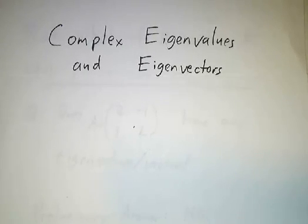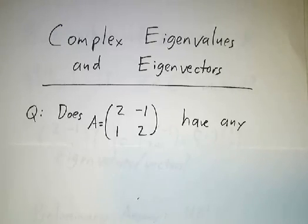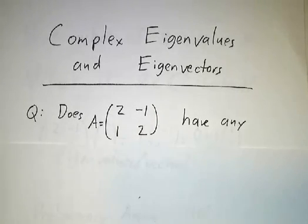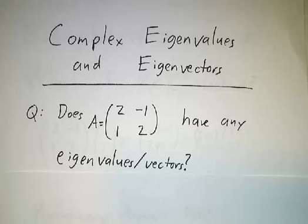In this video, we're going to talk about complex eigenvalues and eigenvectors. We'll start with an example. Let's take a look at the matrix. So does that have any eigenvalues and eigenvectors?